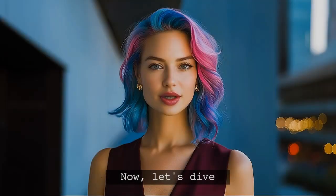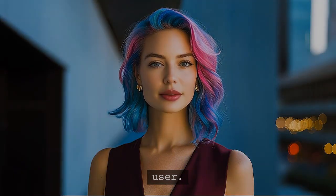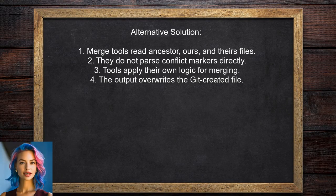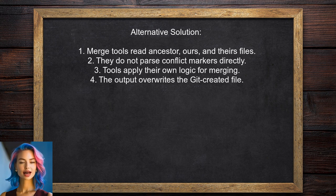Now, let's dive into a different answer from another user. An alternative approach explains that merge tools do not directly read the conflict markers in the working directory. Instead, they access the ancestor, ours, and theirs files created by Git when you run the Git merge tool command. These tools apply their own logic to generate a merge result and will overwrite the file that Git created.